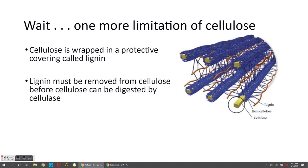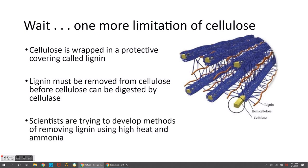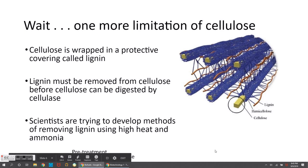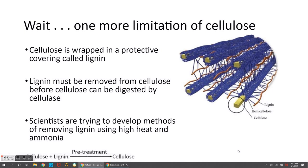Scientists are struggling with removing lignin — there are not a lot of great ways to do this. Some methods being explored include using high heat and ammonia, which is a very toxic or caustic chemical. This makes it a complicated process: cellulose plus lignin has to be pre-treated with heat, ammonia, or other means to remove the lignin and be left with just cellulose. Then we add cellulase to digest the cellulose into simple sugars, and then we can finally feed it to yeast to produce ATP and the ethanol to power our cars.